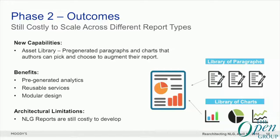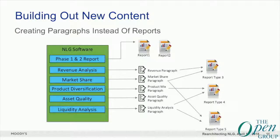The outcomes of phase 2 included the introduction of new components and a modular, reusable services design — which means less time to market for new functionalities. However, the limitation was still the natural language generation software, which was still rule-based, and the cost of developing new types of paragraphs was pretty high. We managed to produce different types of paragraphs like market share, asset quality, and liquidity analysis — which are types of sections in our financial reports — and used them individually in our reports.